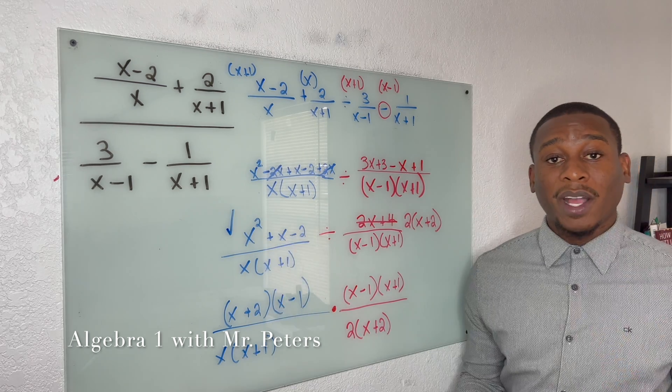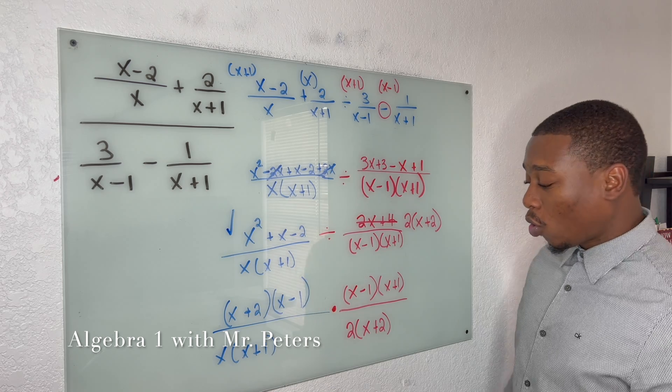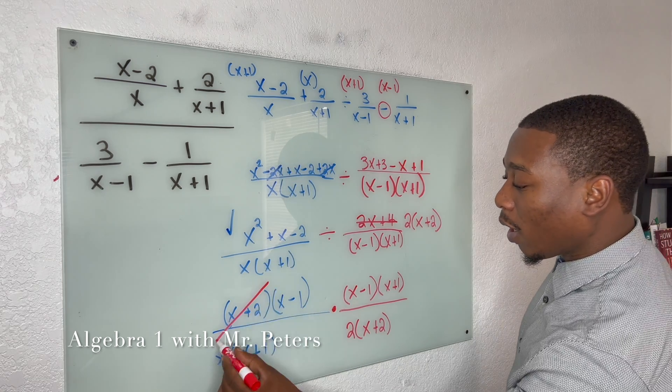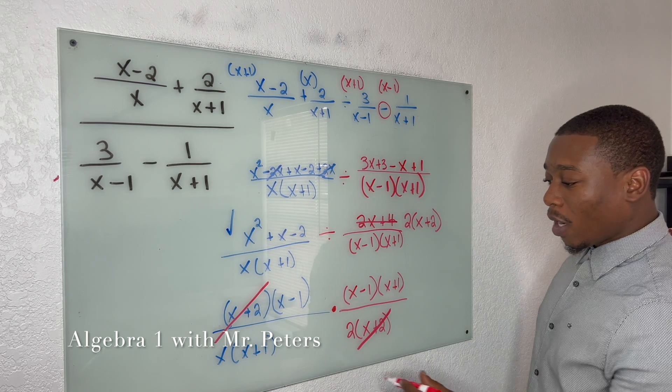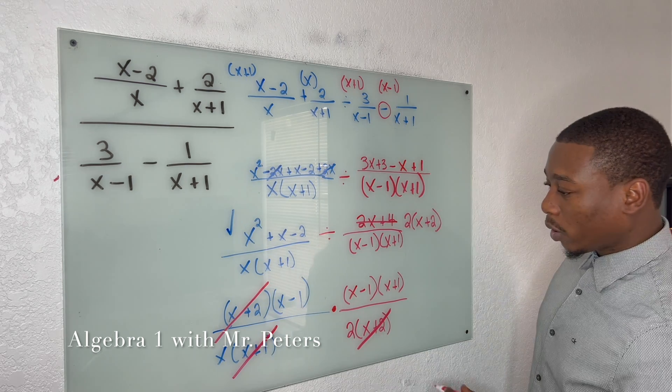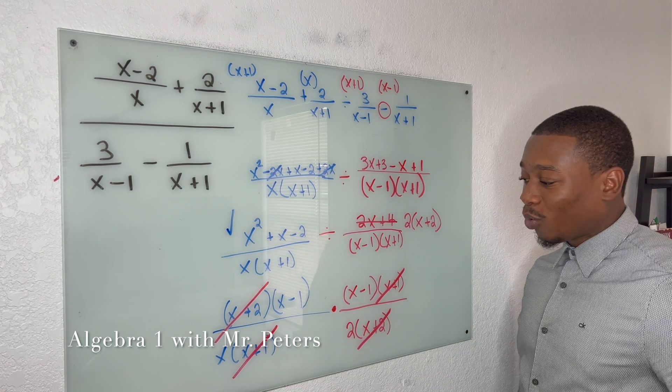So at this step right now, guys, what we want to do is cross cancel. So if we look, we could cancel out x plus 2 with x plus 2, and then we could cancel out x plus 1 with x plus 1. Now, what are we left with?